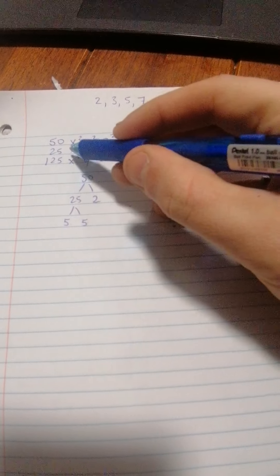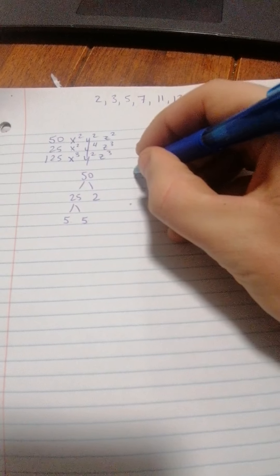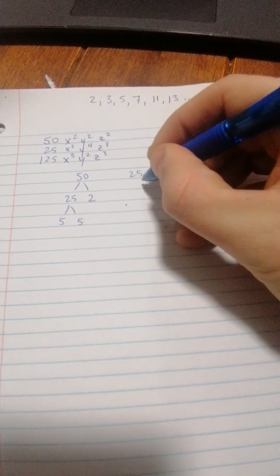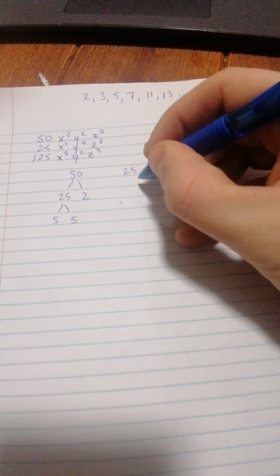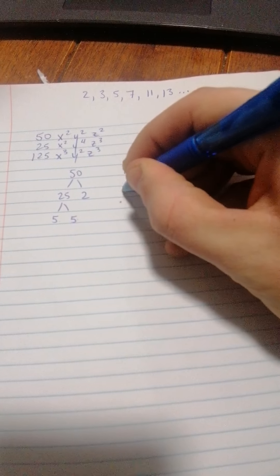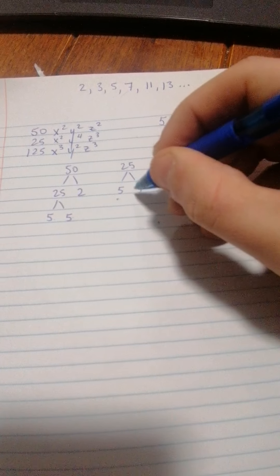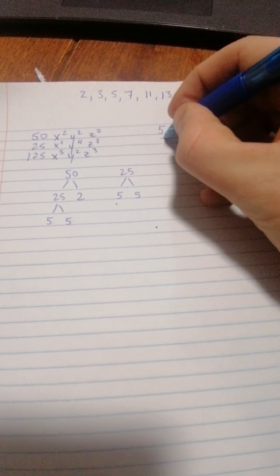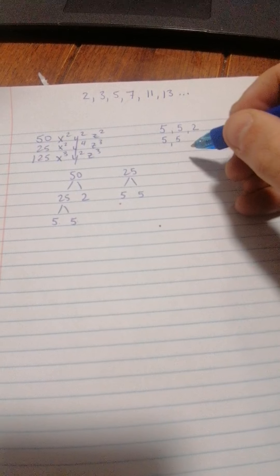Likewise we can do this for 25. We kind of already did it here, but yeah, 25 doesn't divide evenly by 2 or by 3, but it does divide by 5. So those are two 5s. That's for polynomial number 2.